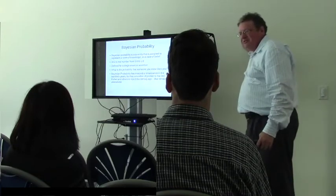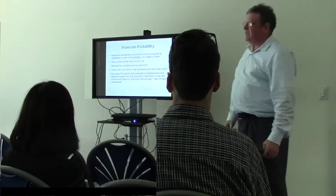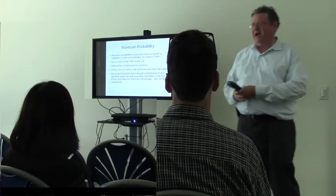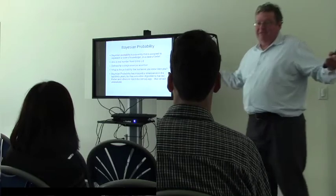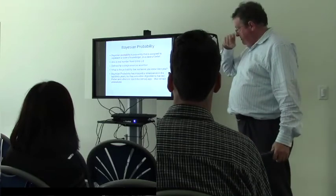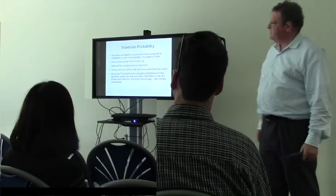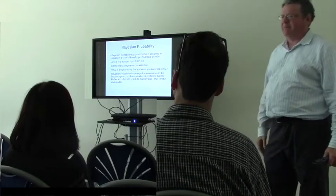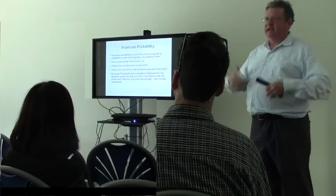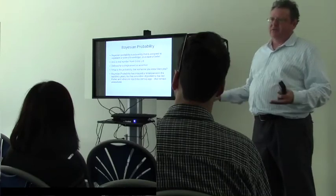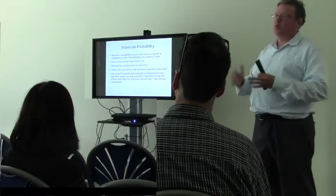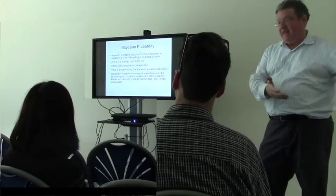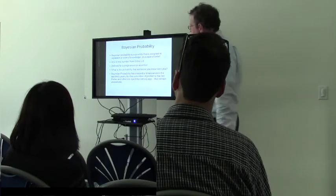Some things I'm certain of — like I can't walk through this wall. Others I have no idea about, like whether there are aliens in outer space. These two concepts of probability have gone back and forth in popularity. When Fisher started his work, Bayesian probability was the dominant view, but he ran into problems with it that led him to reject it. Frequentism ruled until roughly the 1980s, and Bayesian methods have made a comeback — you'll see 'Bayesian this' and 'Bayesian that' in machine learning.